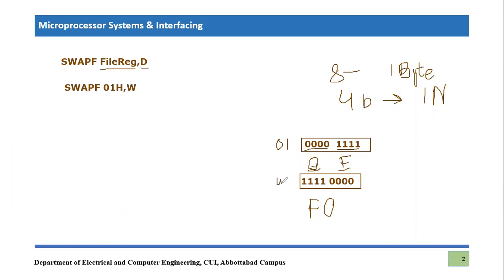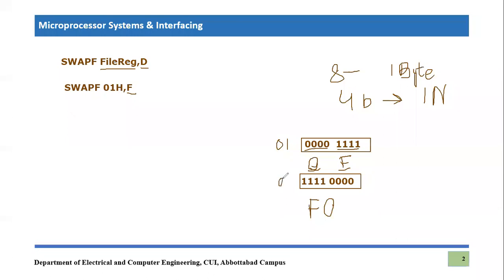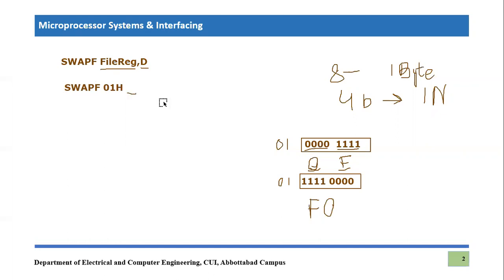Since we mentioned W as the destination, the result goes into the working register, not back into file register 01h. However, if we had specified the file register as the destination, the modified content would be saved in the same 01h file register. If no destination is mentioned, the default destination is the file register.